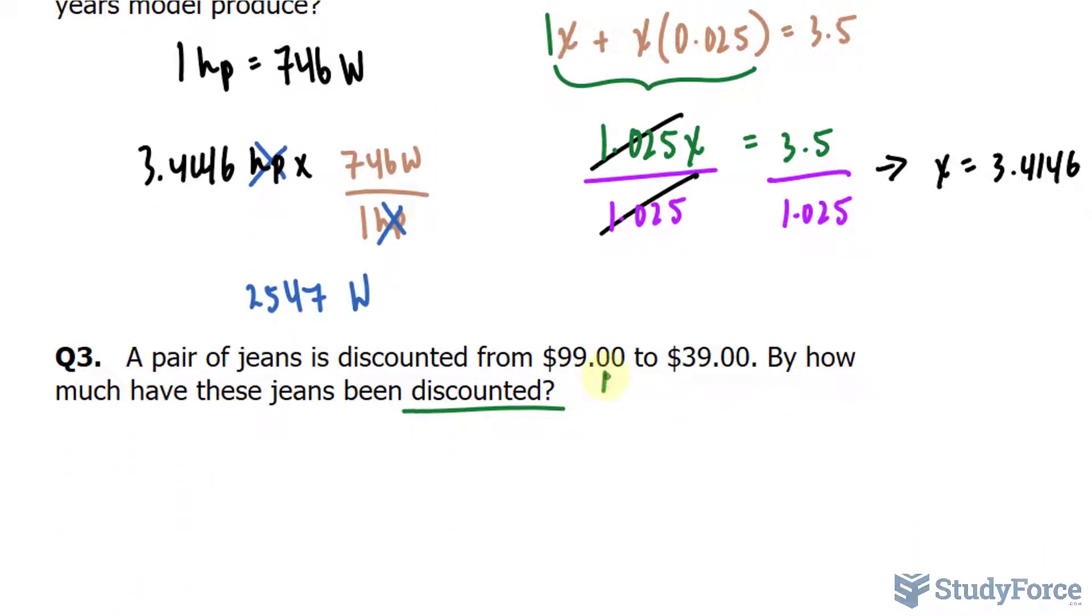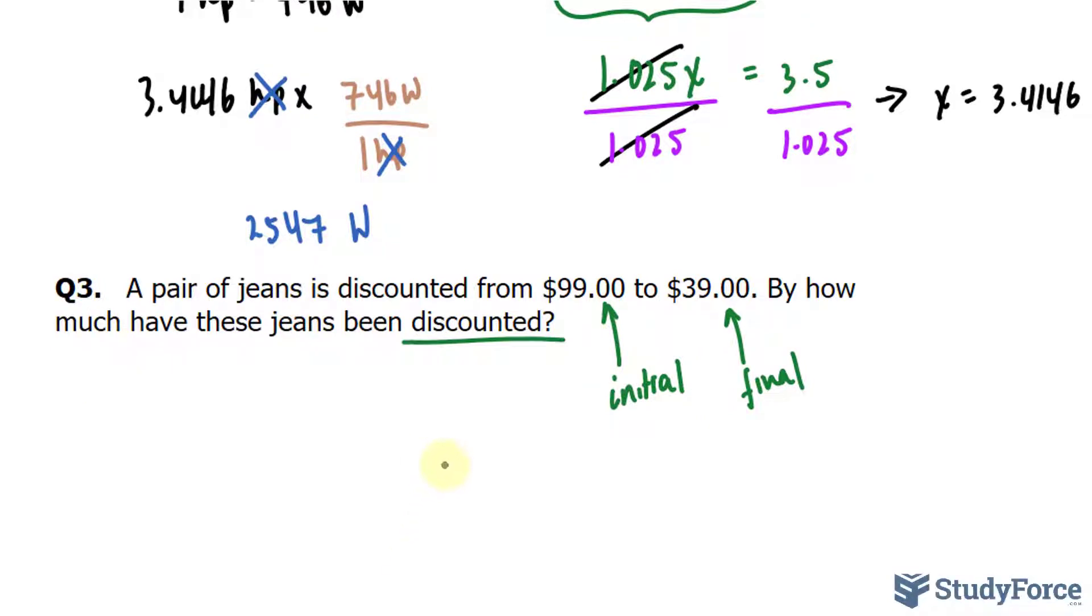So the initial amount is 99. That's the initial amount. And the final amount is 39. And we're looking for the percentage. So using the formula, initial minus initial rate is equal to final, I'll write down 99.00 minus 99.00. The rate's what we're looking for, so I'll put an x there. And the final is $39.